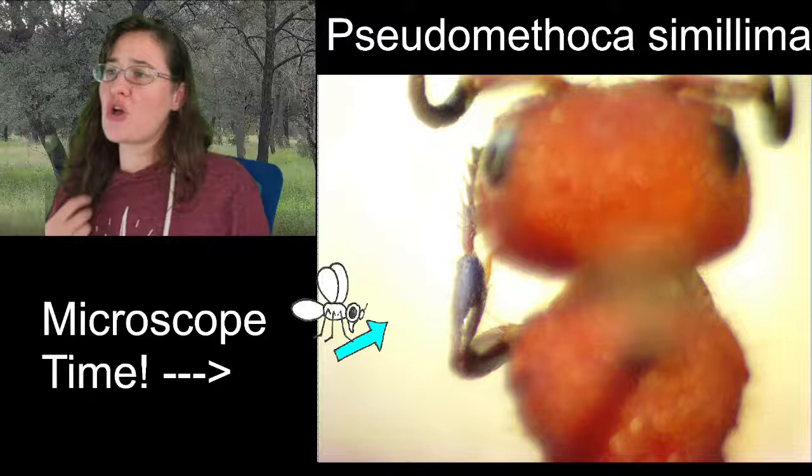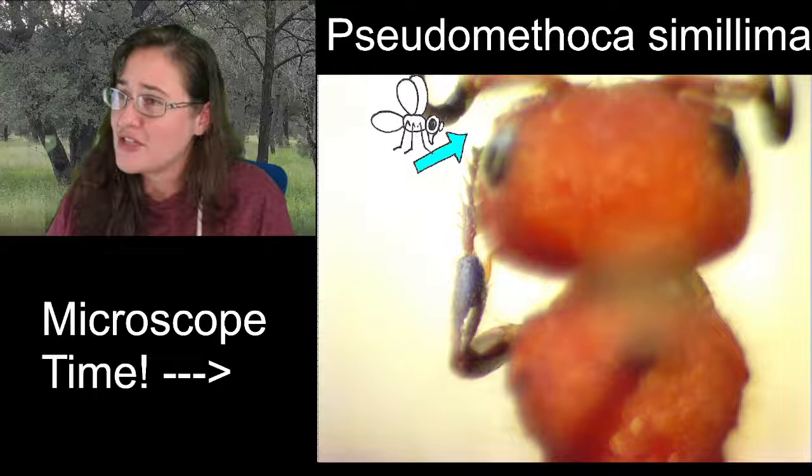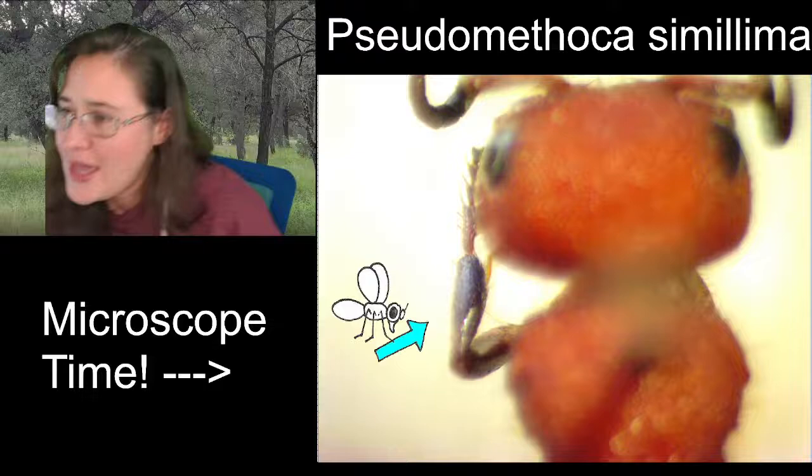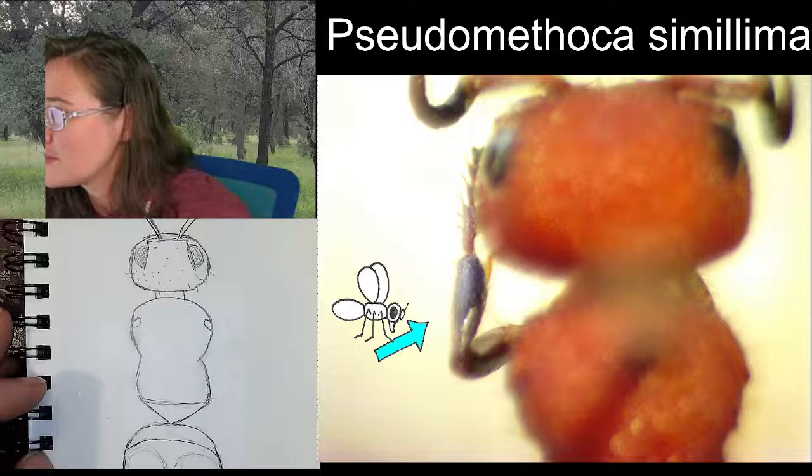It looks like my last tarsal segment on this leg got knocked off. You can draw the rest of the leg and then skip the last one, so you can see what the middle and hind ones look like — they're going to be very similar. Sorry about that — we don't mean to break our specimens.